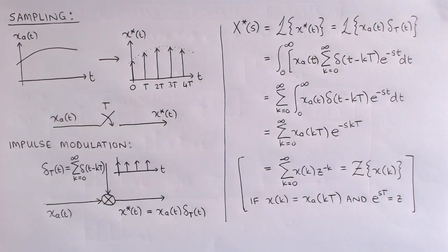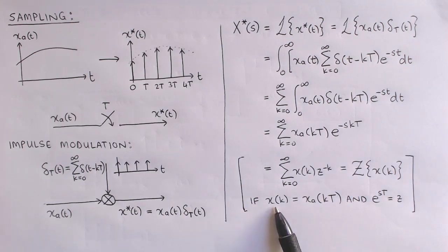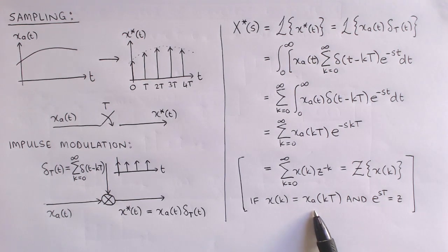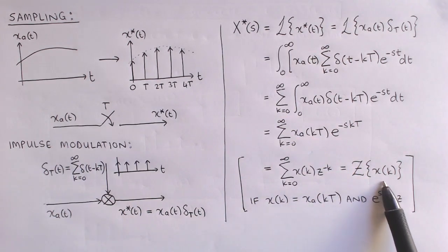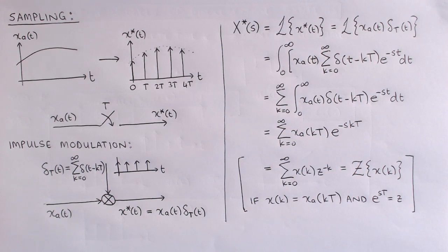An important thing to note here is that sampling is not linear and time-invariant, so we cannot express sampling as a transfer function. Another important thing to note is that if we define a digital signal as the value of the analog signal at the sampling instance, and define Z as e to the power sT, then the Laplace transform of the sampled signal becomes the Z-transform. We can therefore interpret the Z-transform as the Laplace transform of a sampled signal. This gives us a way to relate continuous and discrete poles.